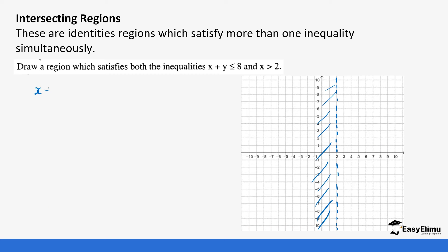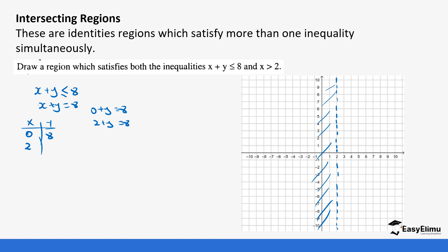The second equation is x plus y is less than or equal to 8. We need to draw this line first on the graph. We treat it as an equation: x plus y equals 8. Picking values — when x is 0, y is 8. When x is 2, y is 6. When x is 4, y is 4.